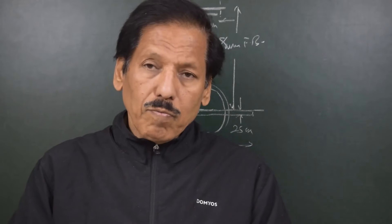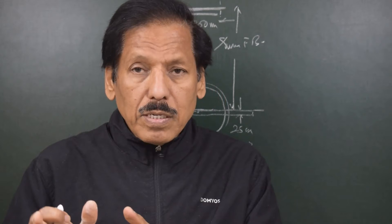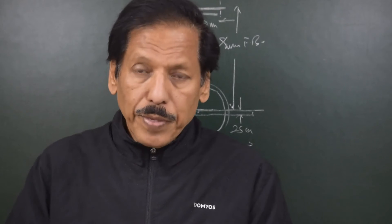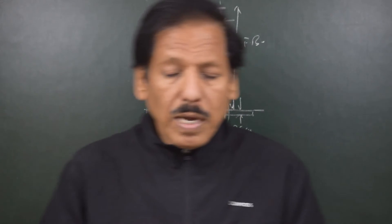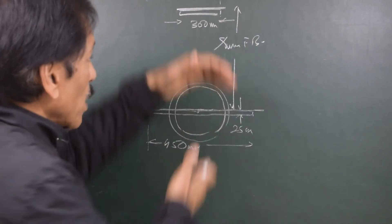Various corrections are applied to the tabular freeboard. For example, the ideal block coefficient is 0.68. If your block coefficient is more than 0.68, for a given length the ship will sink more when damaged, so a penalty is given. Also, the L/D ratio should be at least 15. If it is less than 15, the ship is not safe as regards damage stability — you don't have enough reserve buoyancy if a compartment gets damaged. Corrections are also applied for position and existence of superstructure, bow height, minimum bow height, sheer, etc. What you will be given is the minimum assigned freeboard — that is called the summer freeboard.